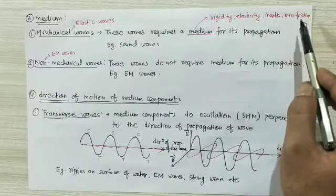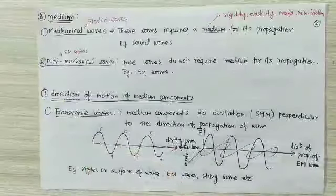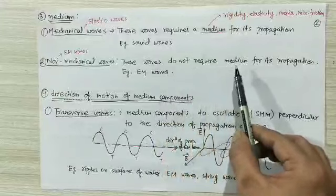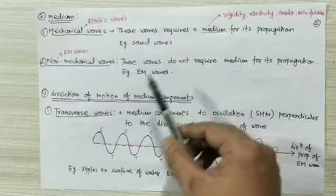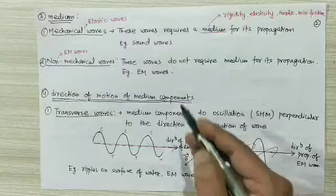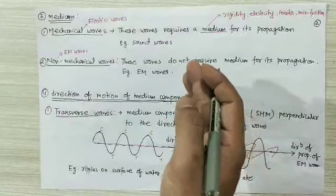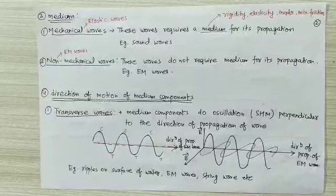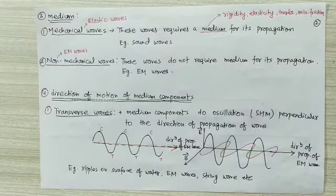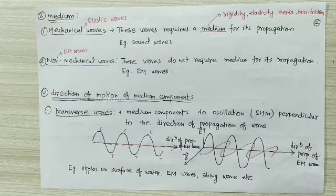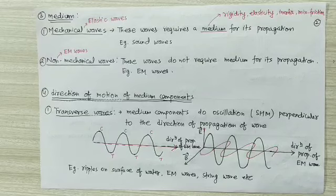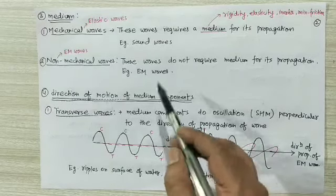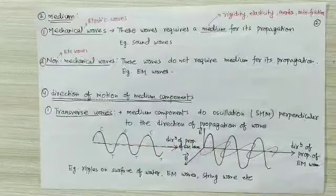The medium for mechanical waves should possess properties like rigidity, elasticity, and inertia, and the friction between particles should be minimum. For non-mechanical waves, these waves do not require a medium for propagation. Example: electromagnetic wave. Light is a type of electromagnetic wave — does light require any medium? No. When light comes from the Sun to Earth, there is no medium — the space is vacuum. Light travels from the Sun to Earth without any medium. So non-mechanical waves do not require any medium for propagation.